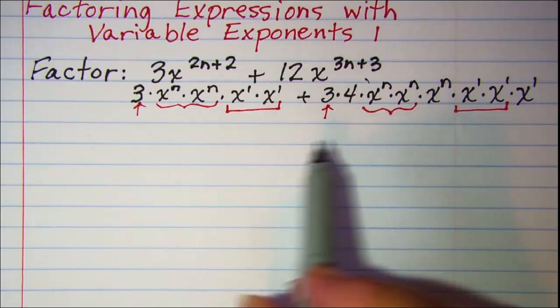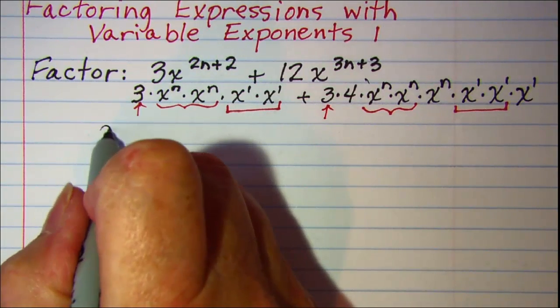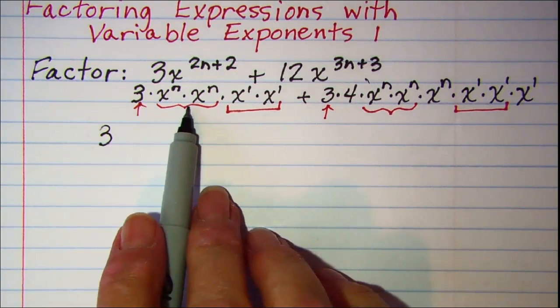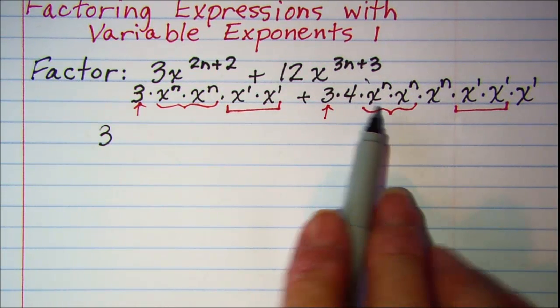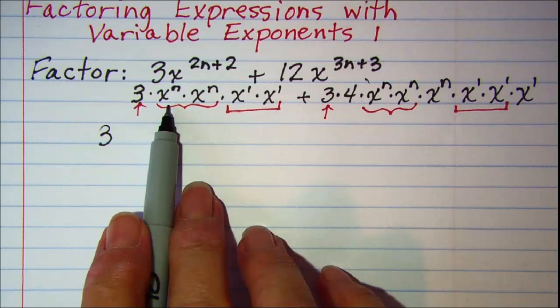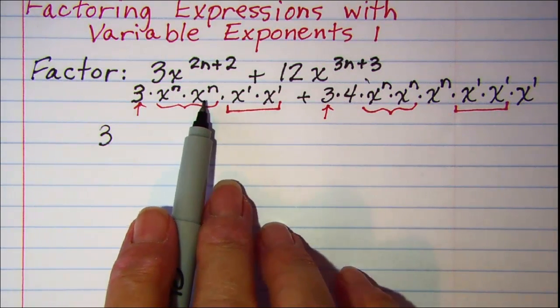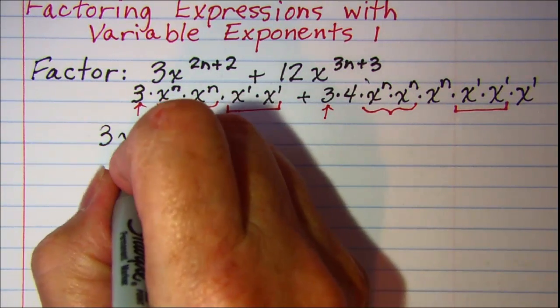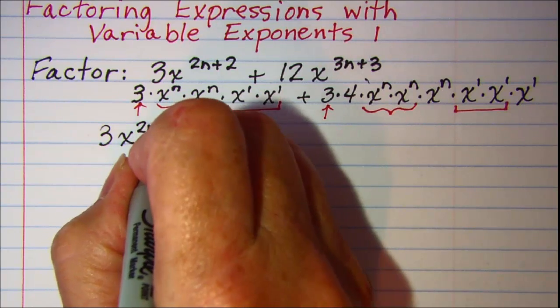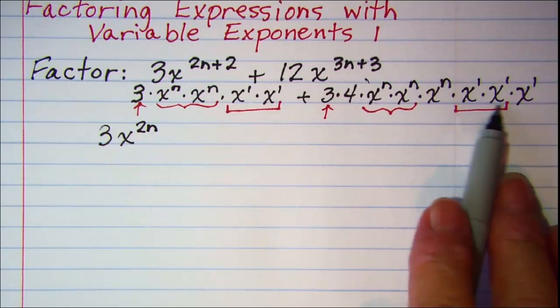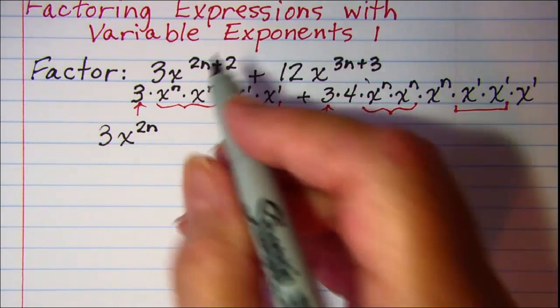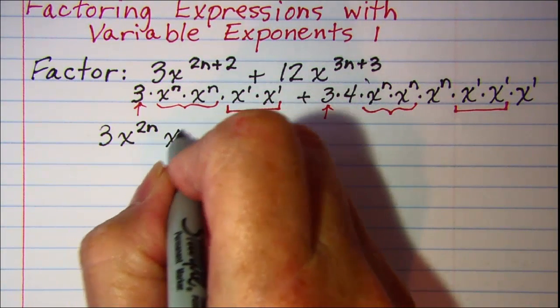So out in front of my parentheses I have a 3, and then these two factors can come out of both terms and that's the same as x to the 2n, and then these two factors can come out of both terms. That's the same as x to the 2.